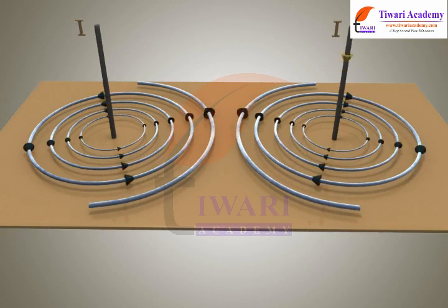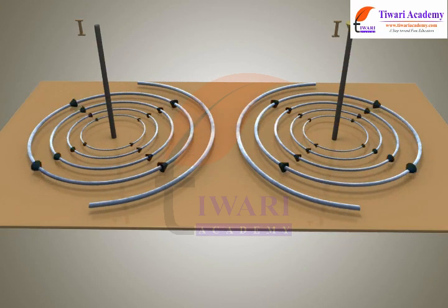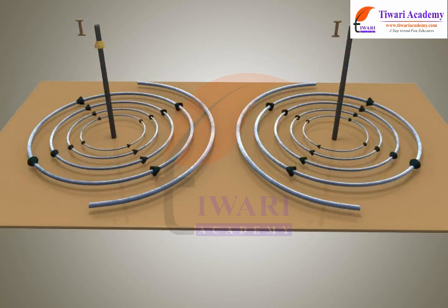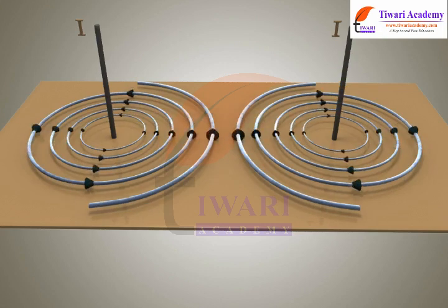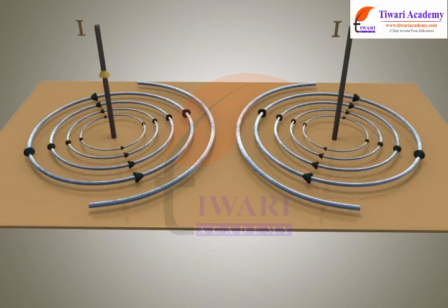Now, if we reverse the current in the conductor and repeat the same experiment, we shall get the closed circular magnetic lines concentric with the conductor.